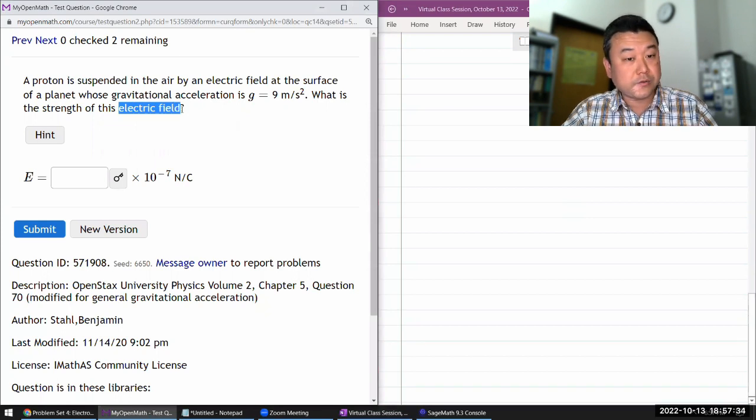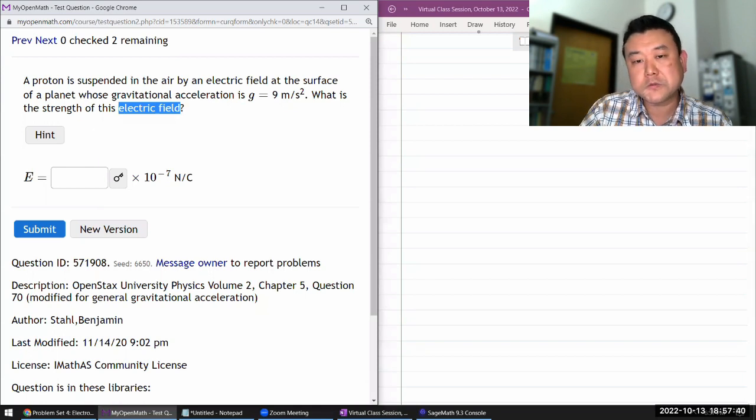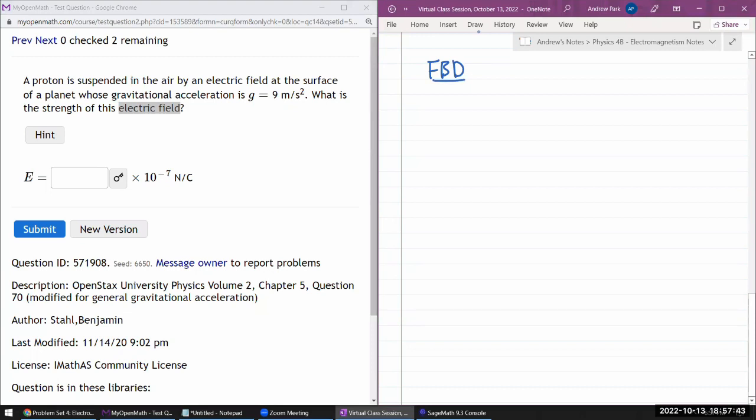I will start by drawing free body diagram. On this free body diagram, I have weight of the proton, mg, pulling it down. And I'm going to assume that the electric field is somehow set up in a way to make the electric force pointed upward. Because that's the only way you're going to get the suspension of the proton. And this will be proton elementary charge E times electric field. That's what I'm solving for.